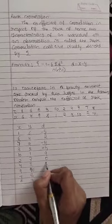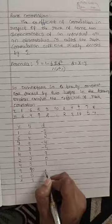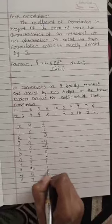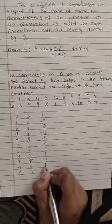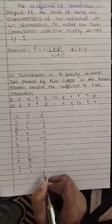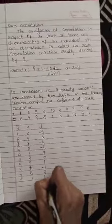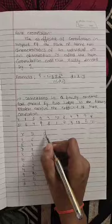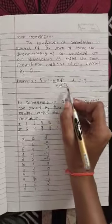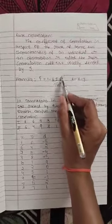4 minus 3 is 1, 9 minus 10 is minus 1, 7 minus 5 is 2, and 8 minus 7 is 1. We got the d value. We can see in the formula we want d square, so square the d value.